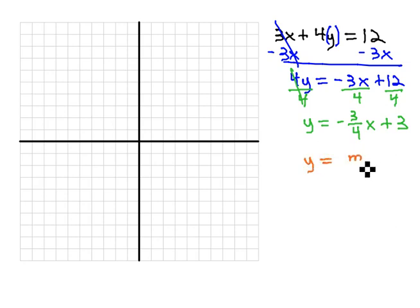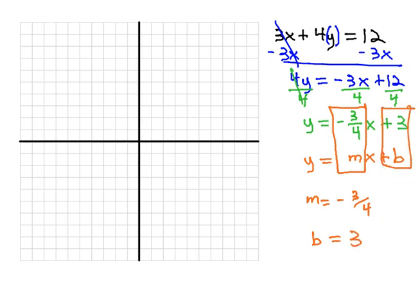If we recall the slope formula of y equals mx plus b, we can quickly see that m, or the slope, is negative 3 fourths, and b, the y-intercept, is at positive 3.